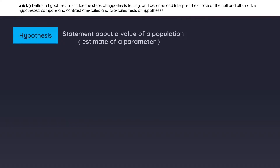Let's start with the basic question: what is a hypothesis? It is a statement about a value of a population — basically, a forecast of some population parameter. For example, here we have a population and we want to know the average age of the population.